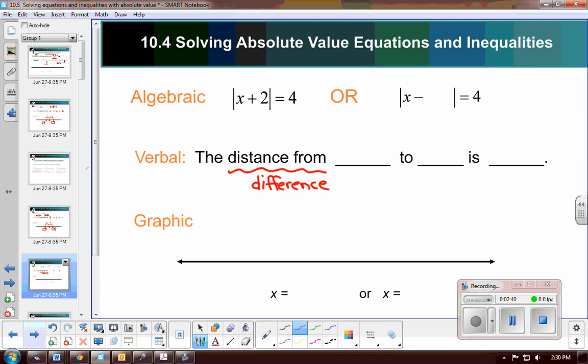So the formula, or the generalization for absolute value, is generally written, that's why it's generalization, as a subtraction problem. So can we rewrite x plus 2 so it's subtraction? Well, yes, without changing the value, it would be x minus a negative 2, because that has the same meaning as x plus 2.